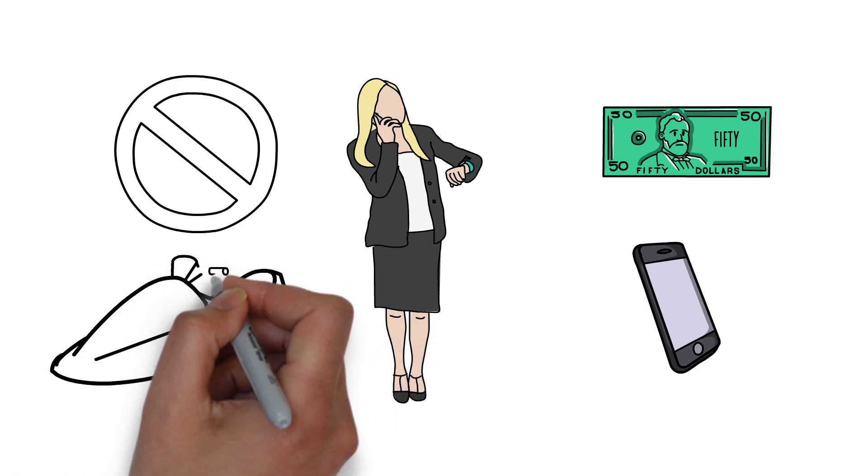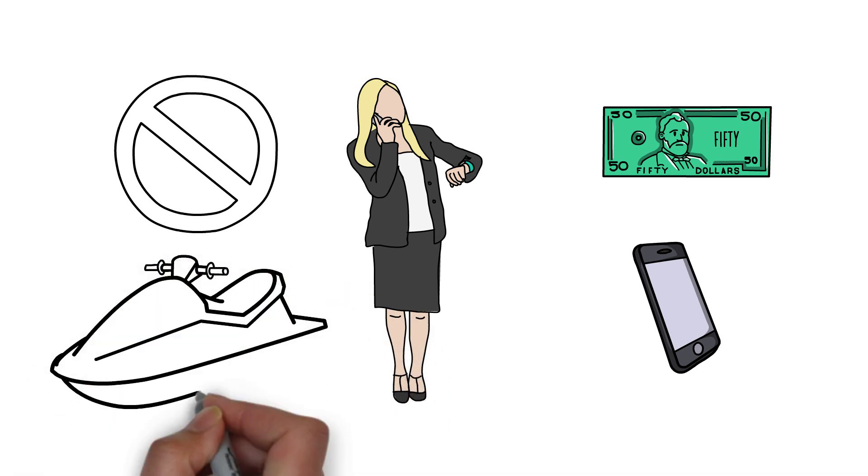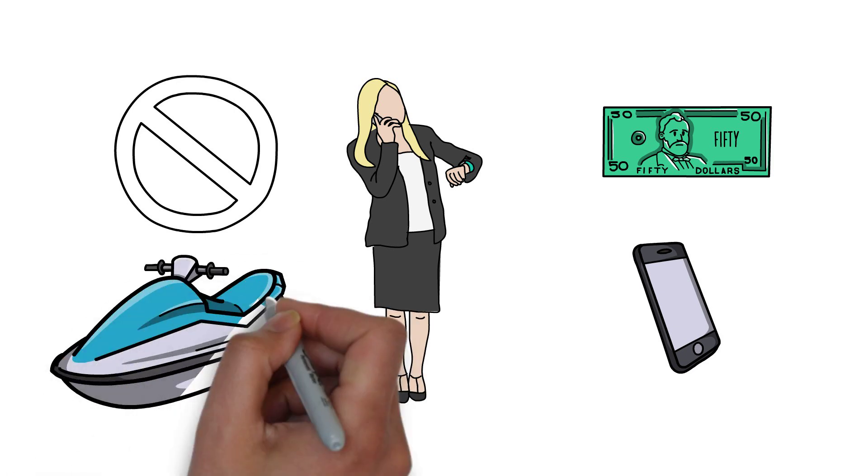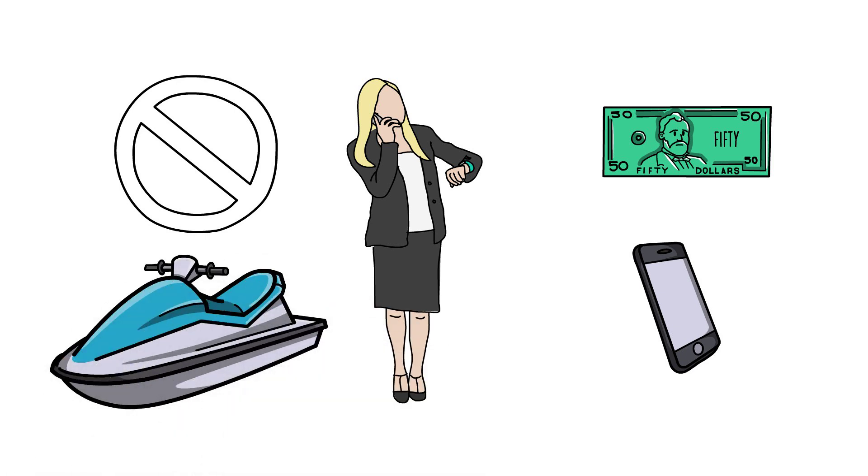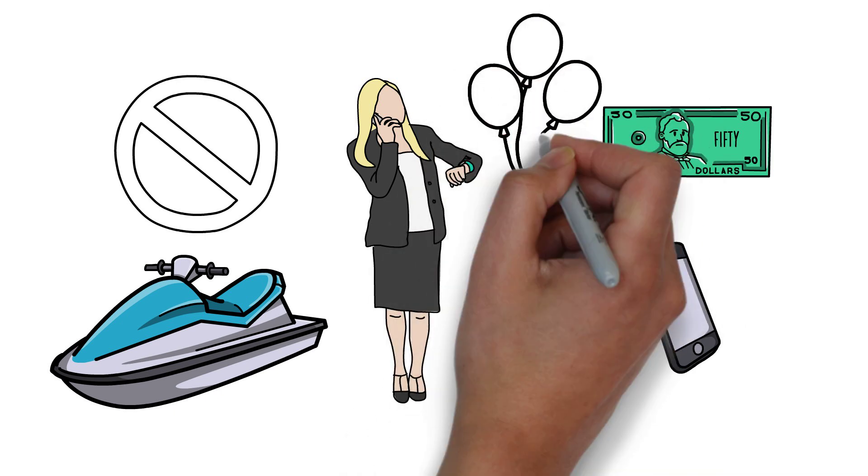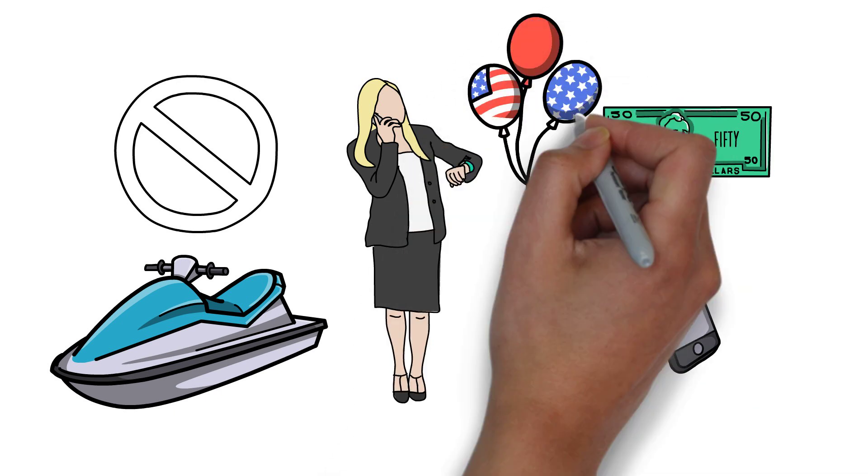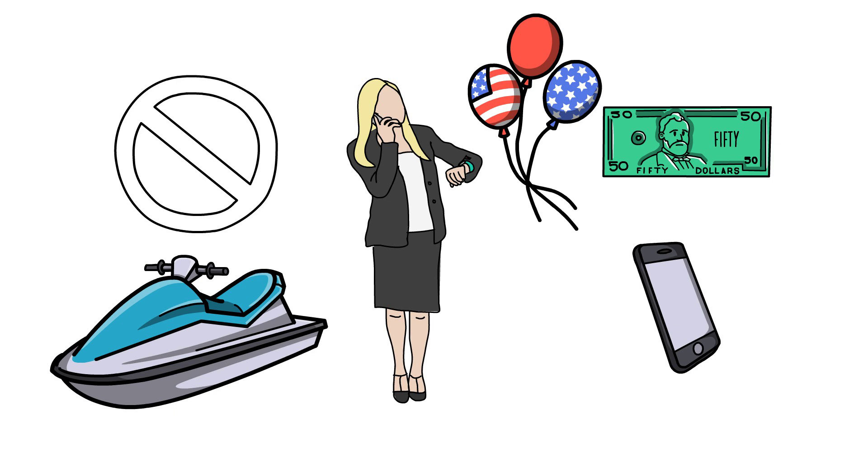Don't worry about keeping up with the Joneses and always spending more as your income increases. Lifestyle creep is a common phenomenon that can keep the middle class working longer to keep up with increased expenses. Make a commitment to yourself that you'll only spend a certain amount of money once certain achievements have been met.